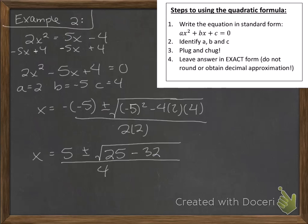Well 25 minus 32 is probably going to give us a negative number because 32 is larger than 25. So we have 5 plus or minus the square root of negative 7 all over 4. Do you remember what we have to do when we have the square root of a negative number? Well we have to rewrite it in terms of i. So we have x is equal to 5 plus or minus i square root of 7 all over 4.